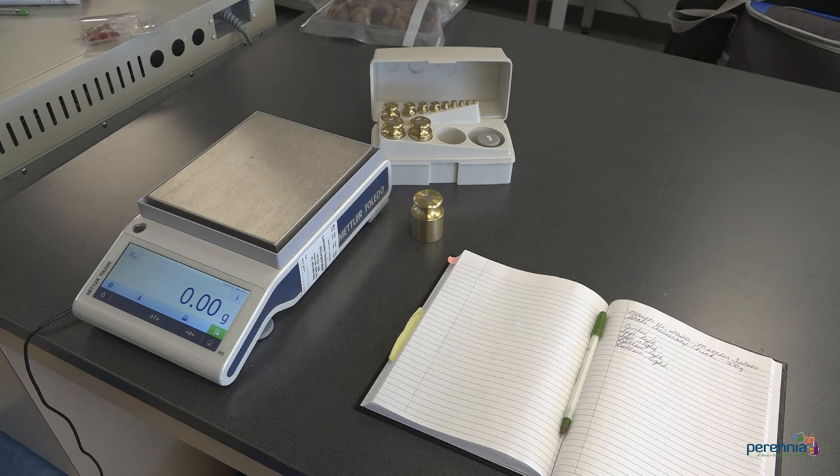It is important to understand the difference between a scale calibration and an accuracy check. Certified scales for trade can only be calibrated by a certified weights and measures technician, whereas scale accuracy checks can be performed by trained in-house personnel.